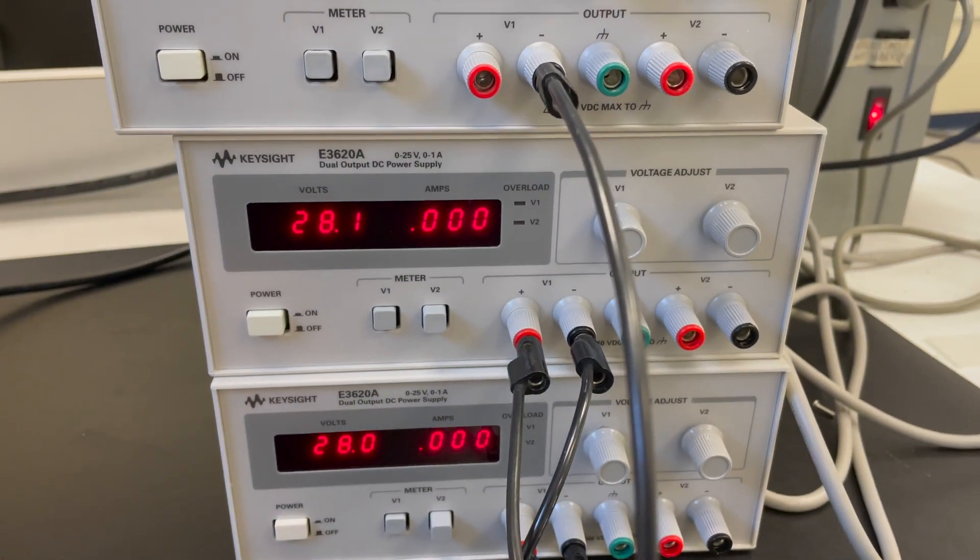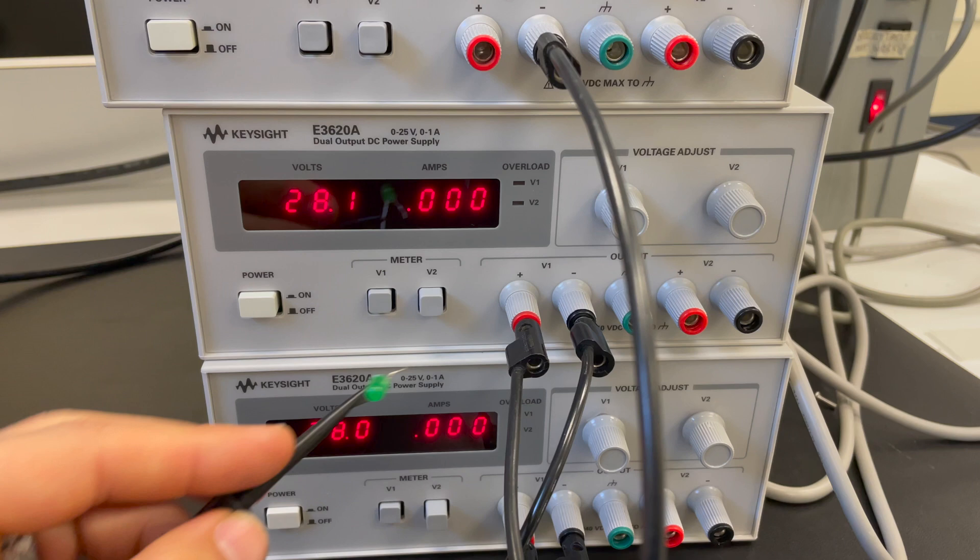So right now I'm applying 28 volts in reverse bias. And you may be wondering right now why I have all these power supplies stacked on top of each other. Now without going into too many of the details it's because these power supplies only go up to 28 volts and I need a lot more than that.